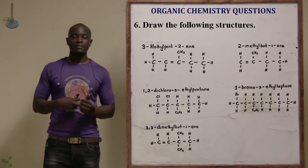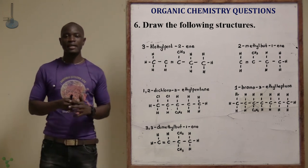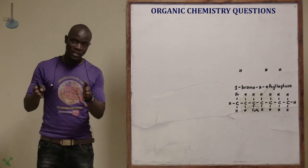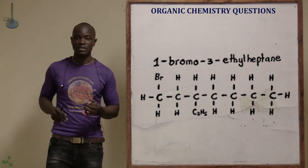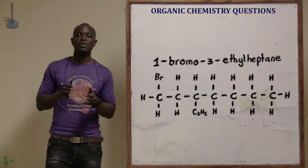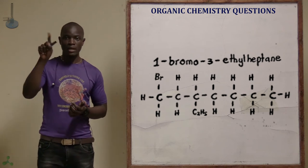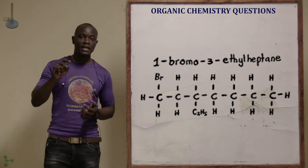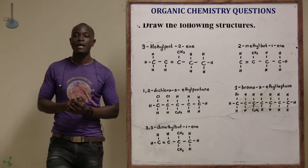Letter D is 1-bromo-3-ethylpentane. We have pentane, so draw 5 carbon atoms. This is an alkane — no triple or double bond. At carbon 1, draw a bromine (Br). At carbon 3, draw an ethyl group (C2H5). That is the structure of 1-bromo-3-ethylpentane.